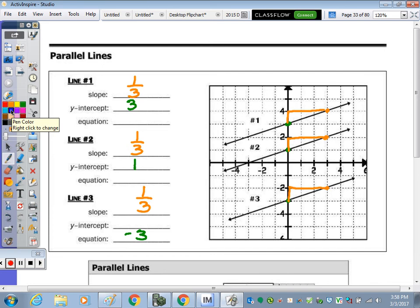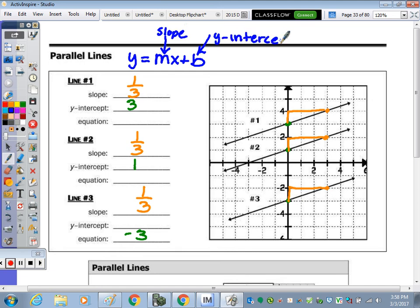Okay, so let's write the equation. Y equals mx plus b, where m is the slope and b is the y-intercept. So this would be y equals 1 third x plus 3. This is going to be y equals 1 third x plus 1. And down here, I put this intercept down too many lines. So the y-intercept was negative 3. This is y equals 1 third x minus 3.